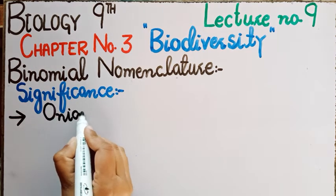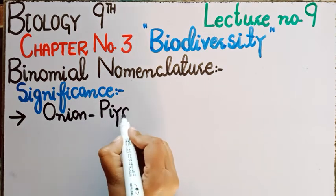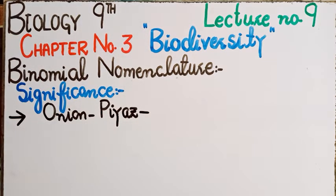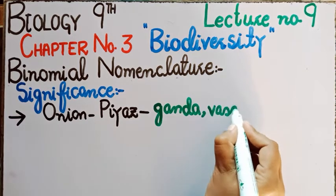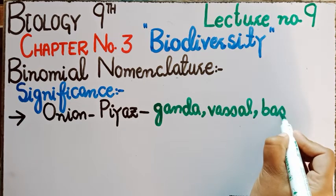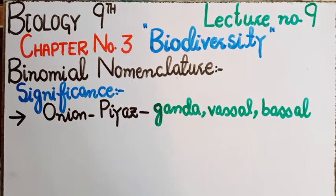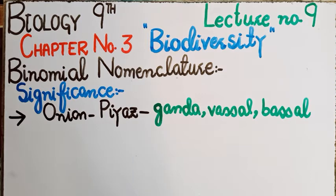Onion جس کو ہم اردو میں پیاز کہتے ہیں — ہمارے ہی ملک کے کچھ students confused ہوں گے اگر انہوں نے پہلی بار یہ لفظ سنا ہو۔ اور اگر انہی words کو out of the country use کریں تو وہ بھی confused ہوں گے۔ تو جب ایک organism کو different ناموں سے پکارا جاتا ہے تو it always creates the confusion کہ کس organism کے بارے میں بات ہو رہی ہے۔ اسی لیے اس confusion کو ختم کرنے کے لیے organism کو ایک ہی نام دیا گیا، تاکہ جب بھی اس نام سے پکارا جائے تو لوگ سمجھ جائیں کہ کس organism کی بات ہو رہی ہے۔